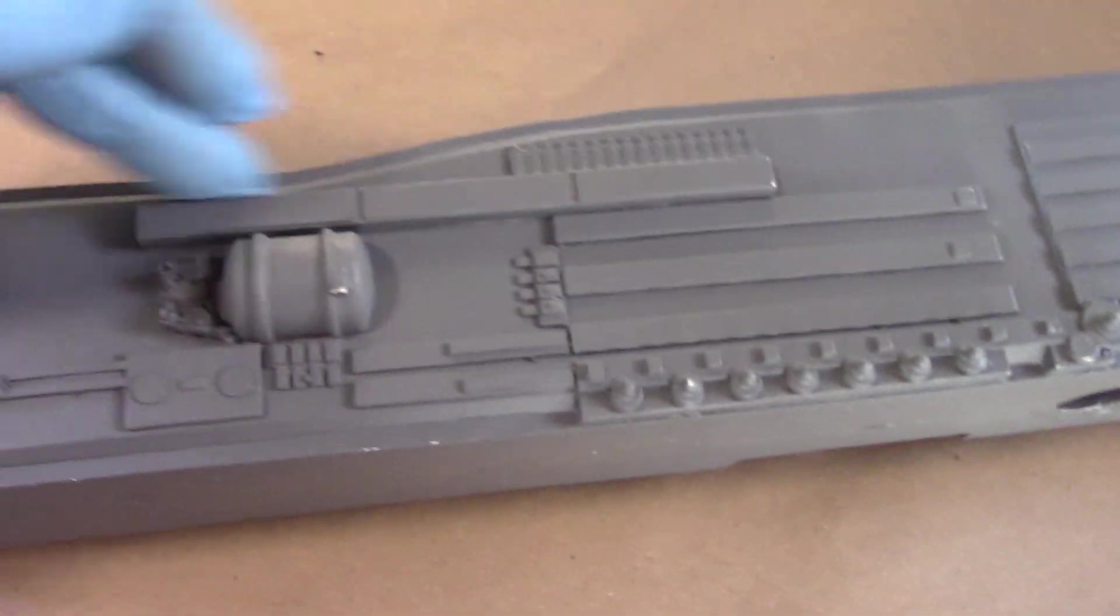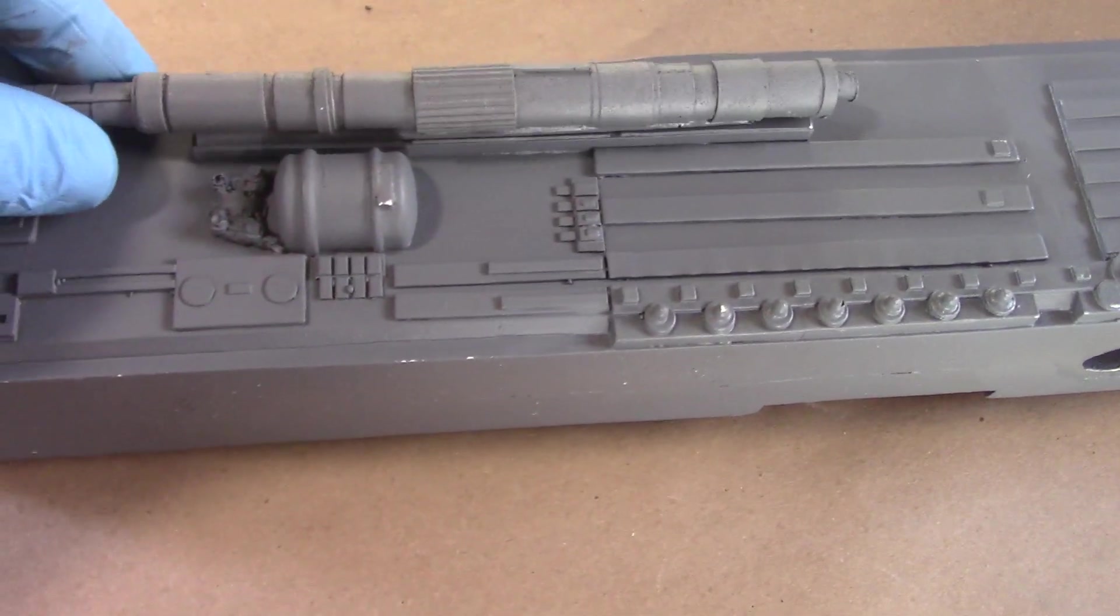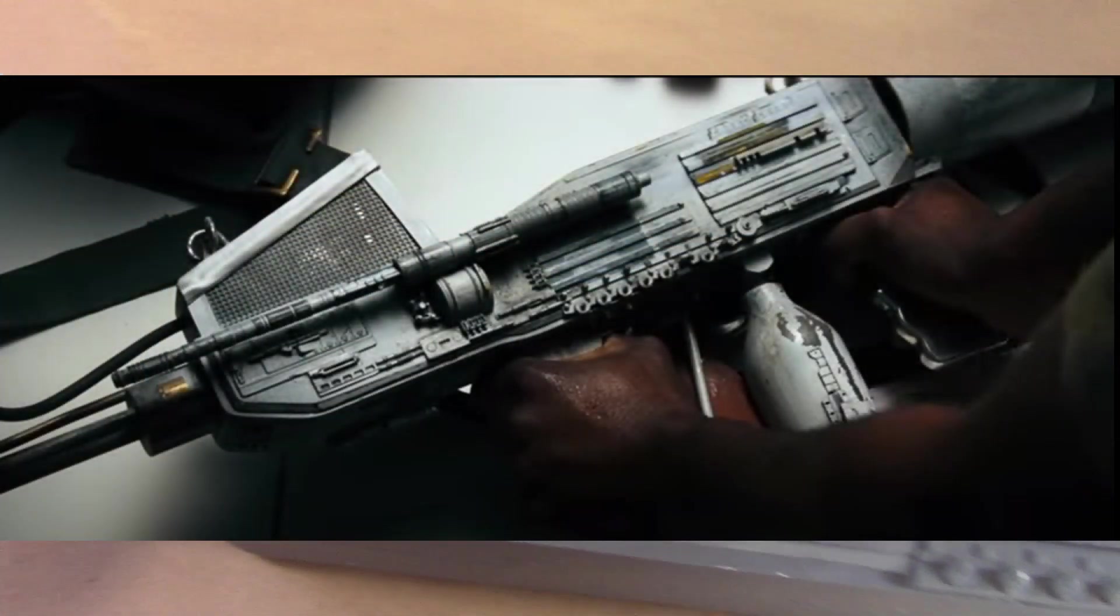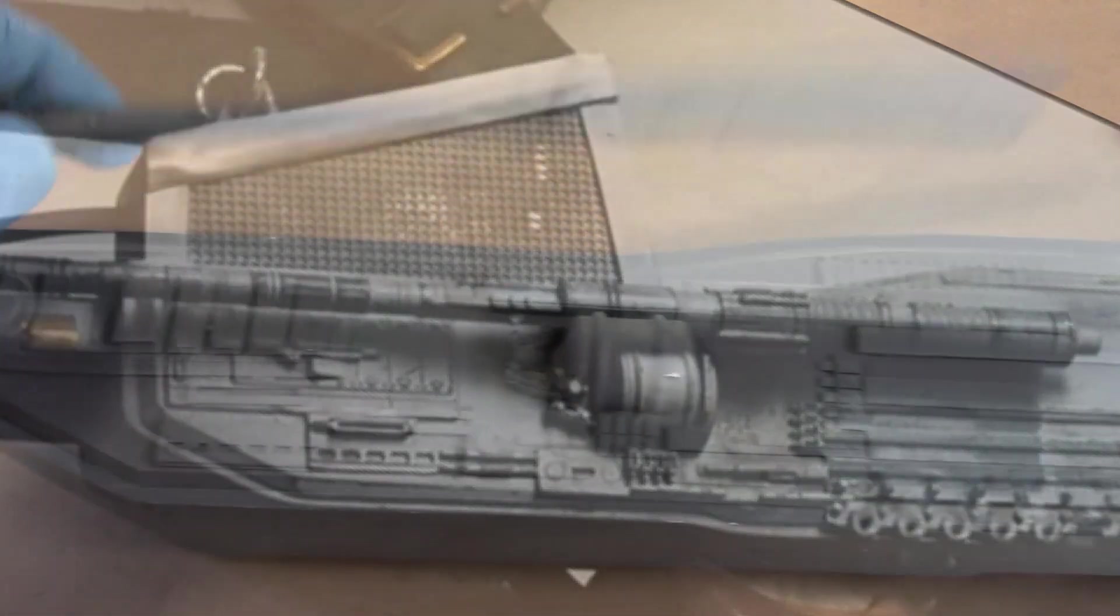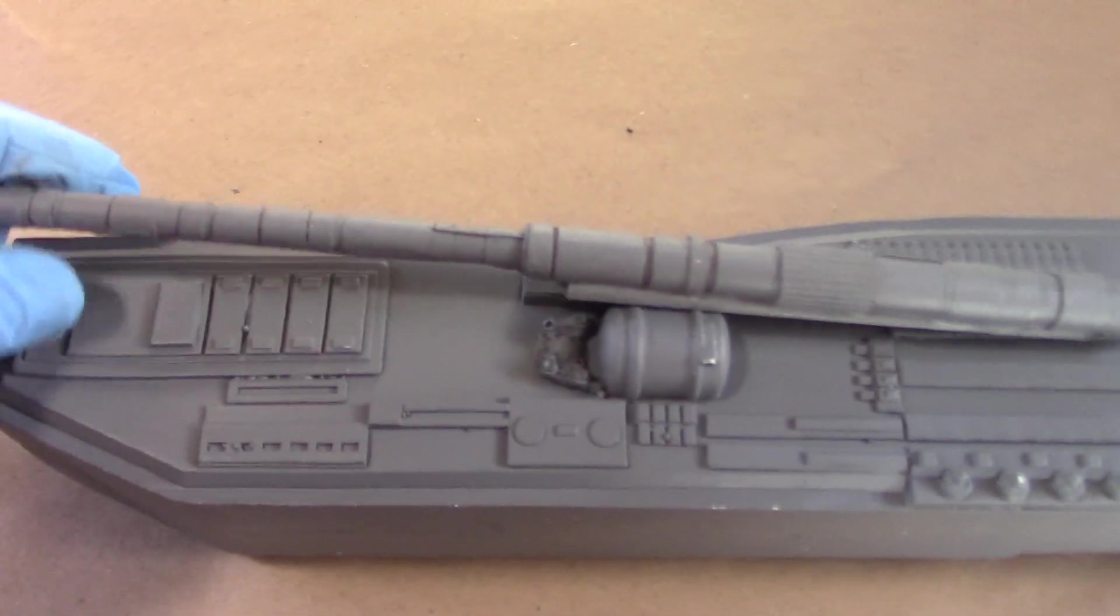And this member here elevates the rod. And that's also missing from the Prop Store piece, but it's on the film-used piece. So this rod now, I realized, sits on top of that platform, like so. Okay, and that's the body. Totally redone, remastered.